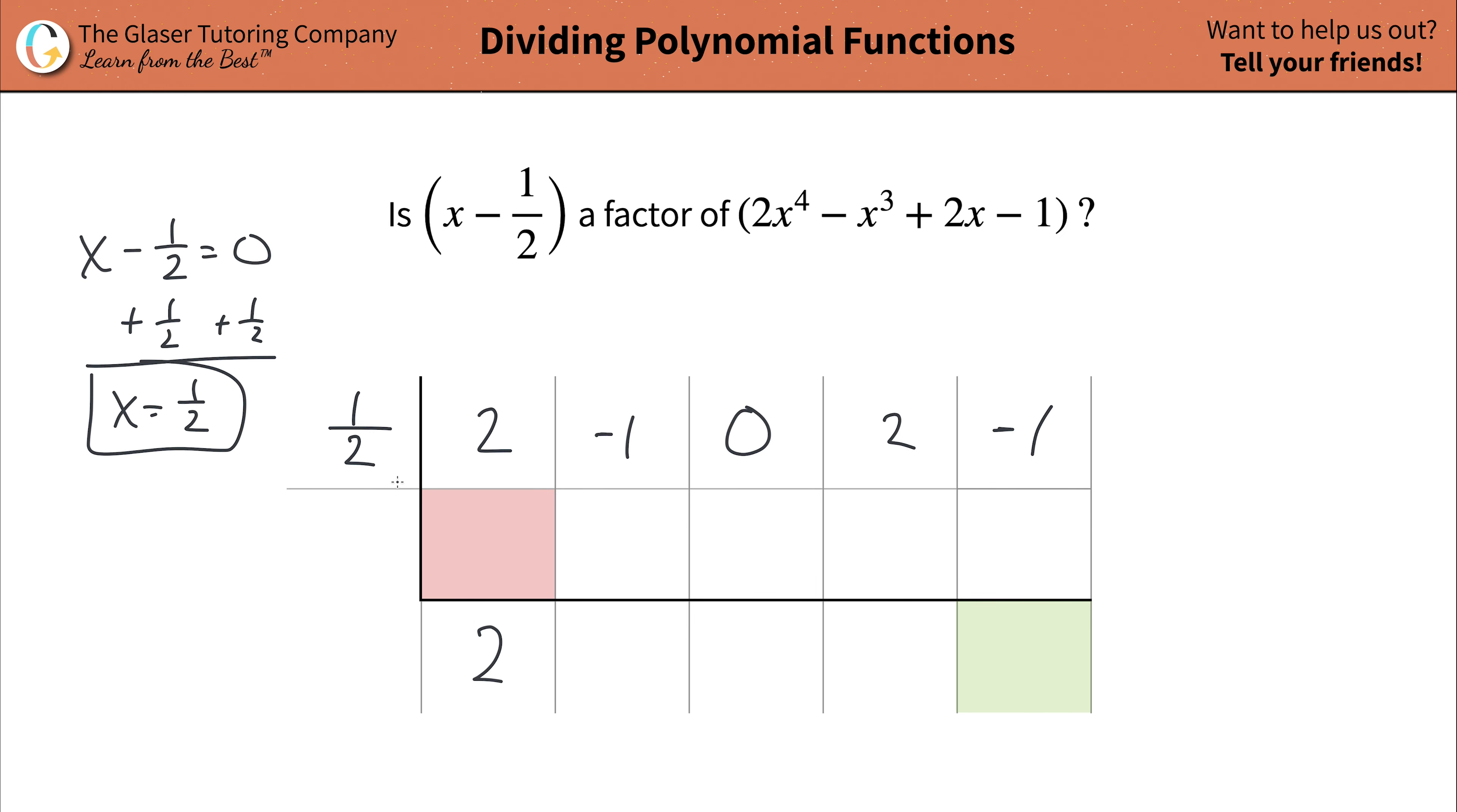Take the value at the bottom and multiply it by the value outside of the synthetic division table. If you need to do that work out, just simply do it to the side. One half multiplied by two is the same thing as multiplying by two over one. You multiply the numerators, two, you multiply those denominators, that's a two, and two divided by two is a one. So that's going to be the result you're going to plug into the next adjacent cell.